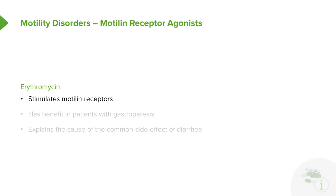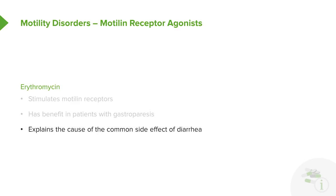Motilin receptor agonists are an interesting group because the prototypical agent is actually an antibiotic — erythromycin. It directly stimulates motilin receptors and has benefits in patients with gastroparesis. This also explains the common side effect of diarrhea. Erythromycin is hard on the system, and most patients who take it for an infection complain of diarrhea because of direct motilin receptor agonist activity.